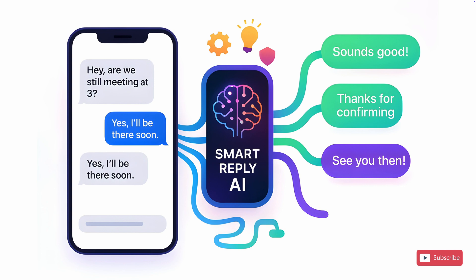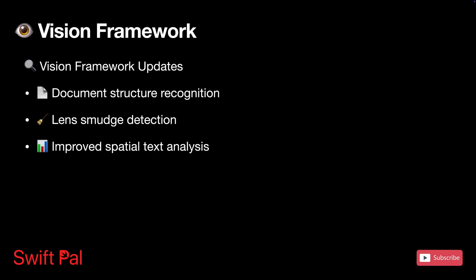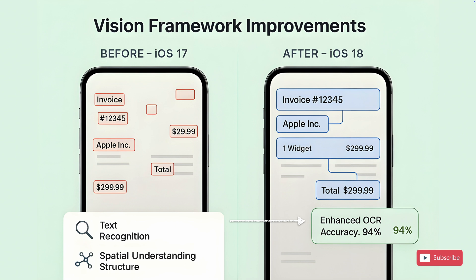Vision got some meaningful updates this year. Two things stood out: document recognition and lens smudge detection. Document recognition is the more obvious win — instead of Vision just reading individual lines of text and leaving you to figure out how they relate, it now understands document structure. We're talking invoices, forms, reports — scenarios where the spatial relationship between text elements actually matters.